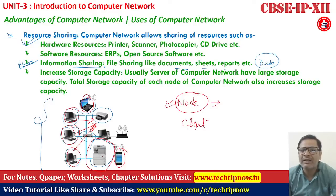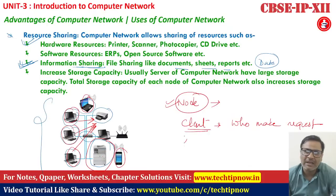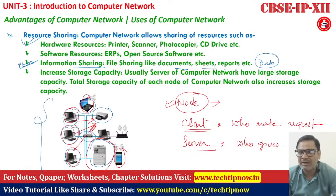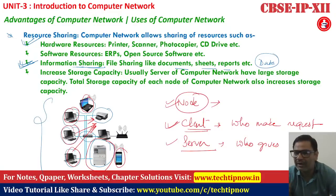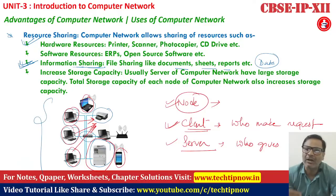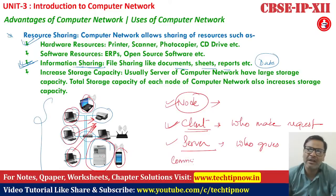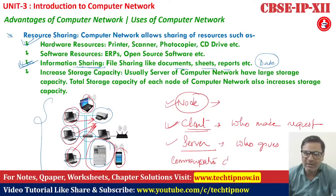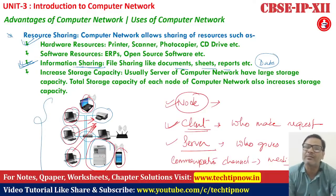Some important terms: every system connected in the network — whether mobile, laptop, or computer — is called a node. The second term is client, who makes a request. The third is server, who gives services. When you make a request, the place from which you get the service or information is basically your server. The data travels through a communication channel, which is the medium through which data travels from client to server or vice versa.